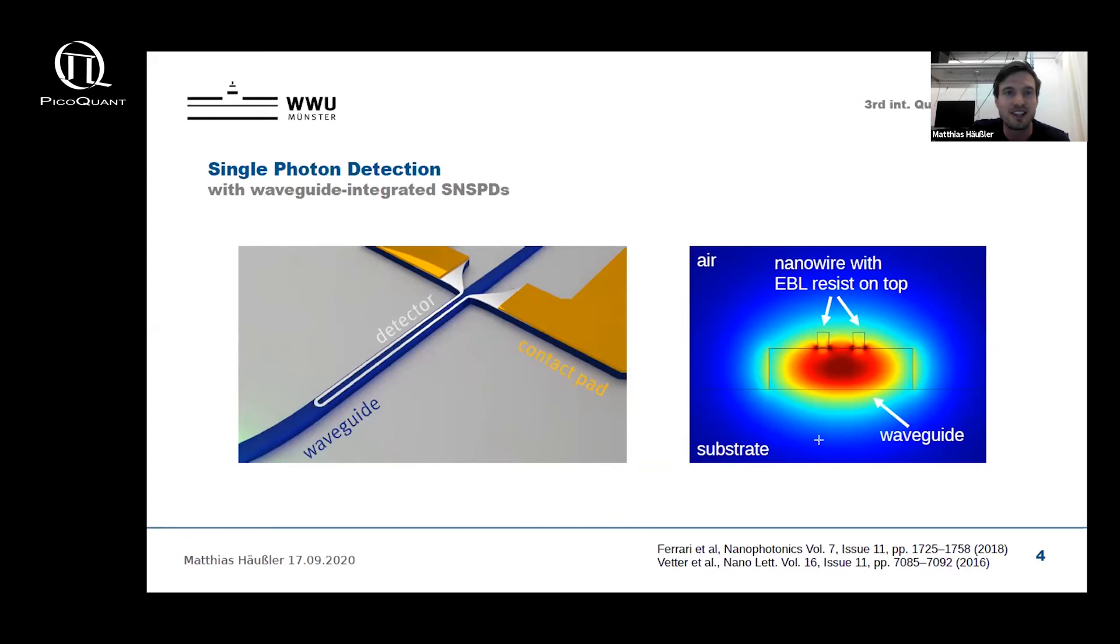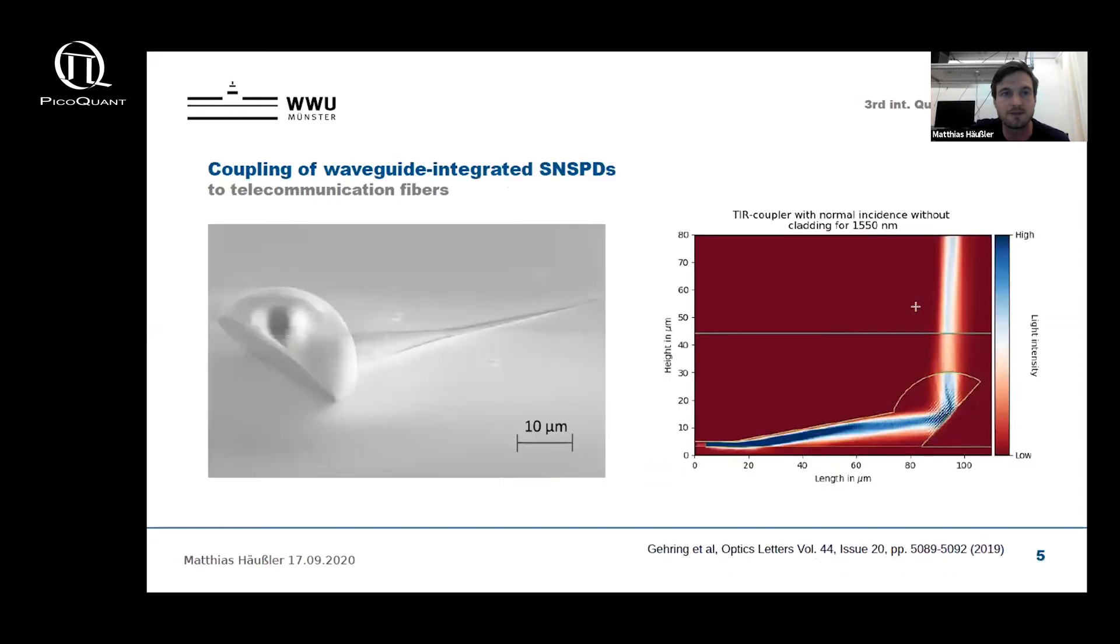However, to detect light coming from a telecom fiber, light first has to be coupled onto the chip and into the waveguide. For this we use highly efficient broadband 3D printed polymeric couplers. These couplers have been fabricated with transmission losses of below 2 dB in a broad spectral range, which makes them ideal for our application.